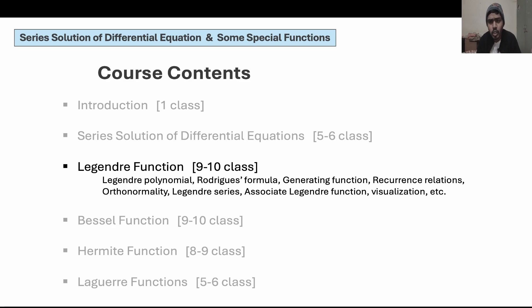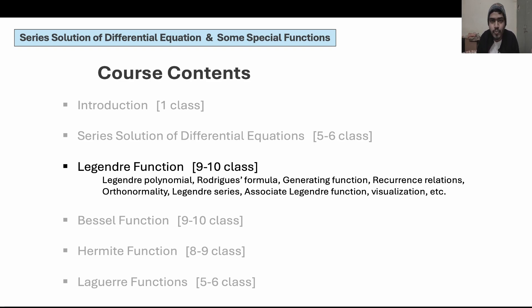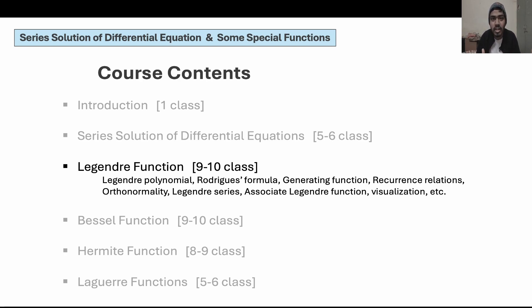There will be lots of recurrence relations in that context. Then we will be talking about the orthonormality of the Legendre polynomials. Orthonormality is basically orthogonality and normalization. We all know that in the case of Cartesian vectors, orthogonality means whether two vectors are perpendicular — the angle between them is 90 degrees. But the Legendre polynomials are functions, so we will be learning what orthogonality means in that case. Then we will normalize them, making them of unit length. After that, we will be learning the Legendre series — if you are given a function, we will write it as a linear combination of Legendre polynomials, similar to Fourier series.